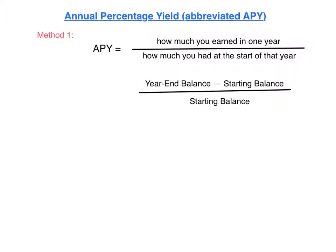There are two ways to compute the APY. The first method basically finds out how much you gained in your account in one year and calculates what percent that was of your original amount. You can see the formula I've written in a couple of ways. Let's actually try an example.